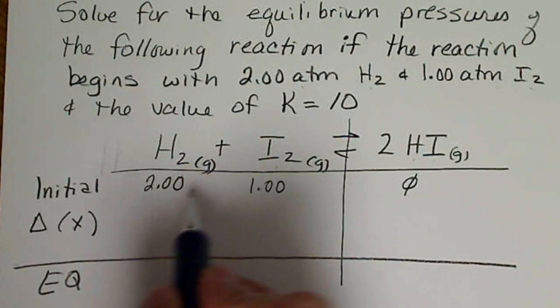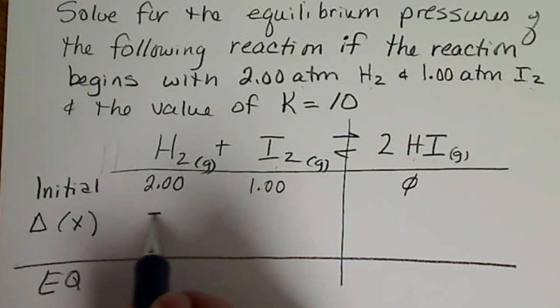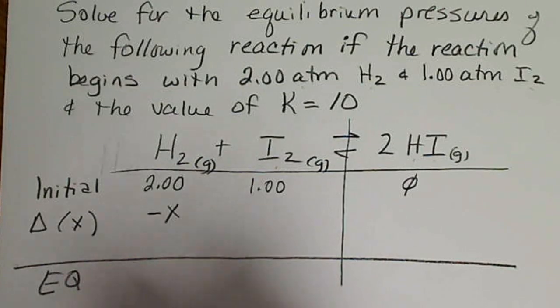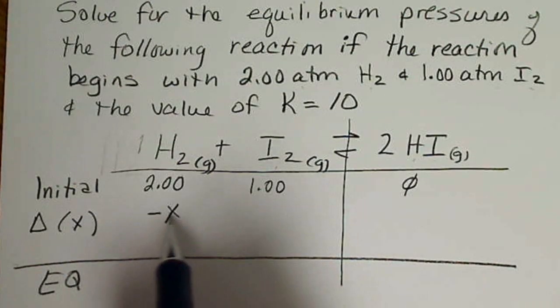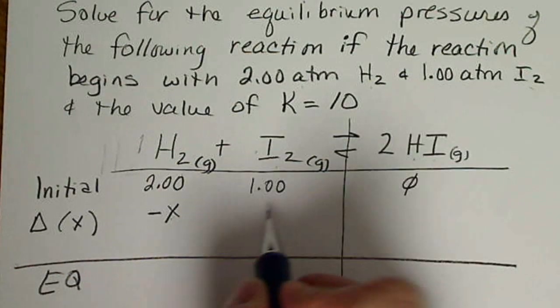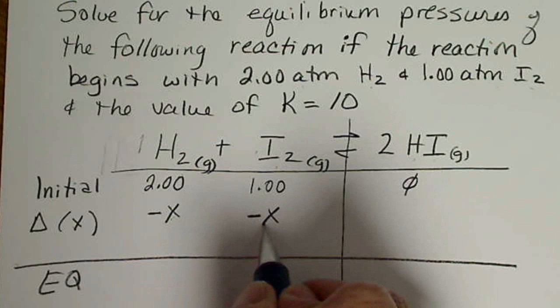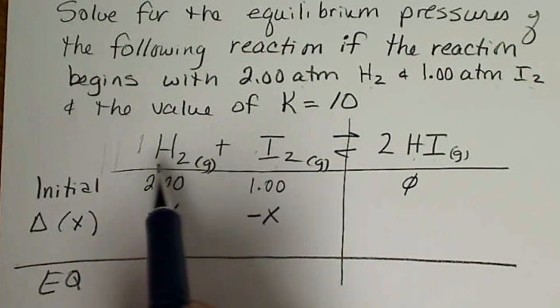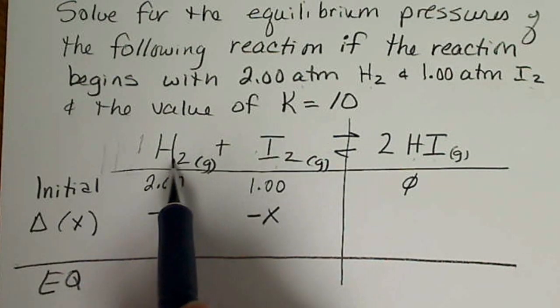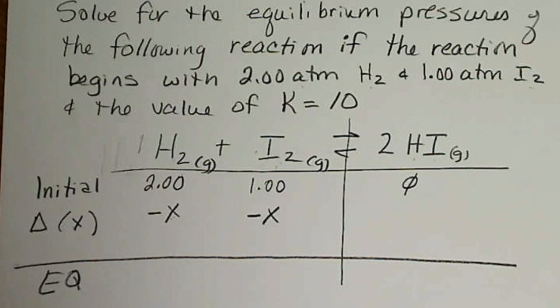So the change, if we lose an amount X, we have 1 mole of hydrogen. So if I lose 1X here, I'm going to lose the same amount here, and that's because in the balanced equation, 1 hydrogen reacts with 1 iodine.